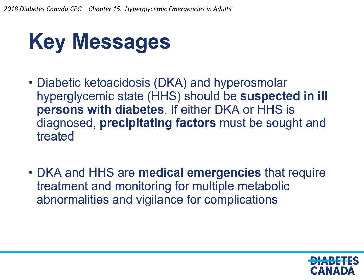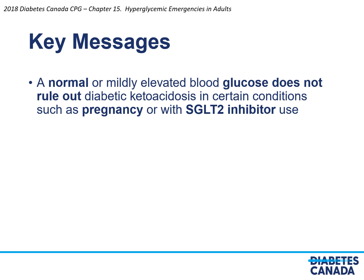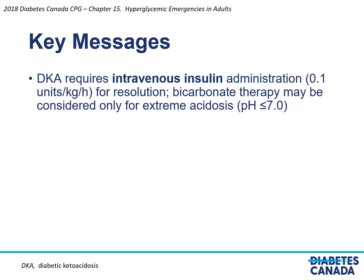Key messages: diabetic ketoacidosis (DKA) and hyperosmolar hyperglycemic state (HHS) should be suspected in ill persons with diabetes. If either is diagnosed, precipitating factors must be sought and treated. DKA and HHS are medical emergencies requiring treatment and monitoring for multiple metabolic abnormalities, with vigilance for complications. A normal or mildly elevated blood glucose does not rule out DKA in conditions such as pregnancy or SGLT2 inhibitor use. DKA requires intravenous insulin at 0.1 units per kilo per hour for resolution. Bicarbonate therapy may be considered only for extreme acidosis such as pH less than 7.